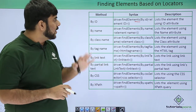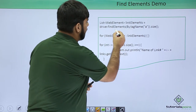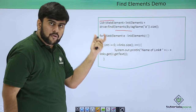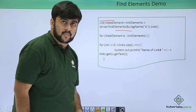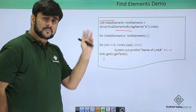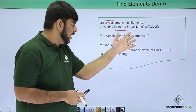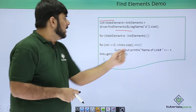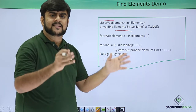Now let's see the practical demo of how we can call this. Whenever we pass findElements — say with a tag name — it returns a list. I run a for loop over the web element objects until we have the element in the list, and I simply keep printing the name of the links one by one. The size property tells me how many elements are there in this array.